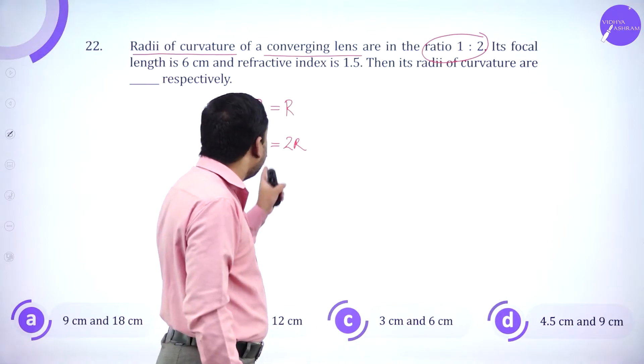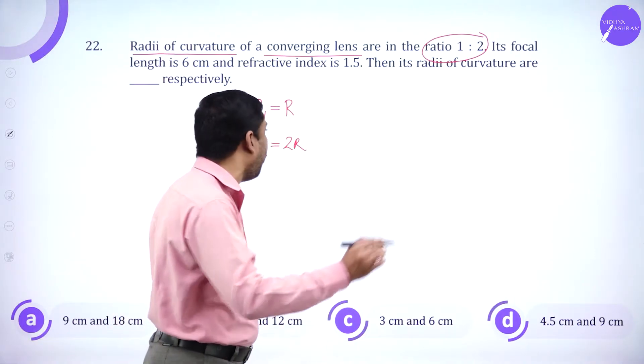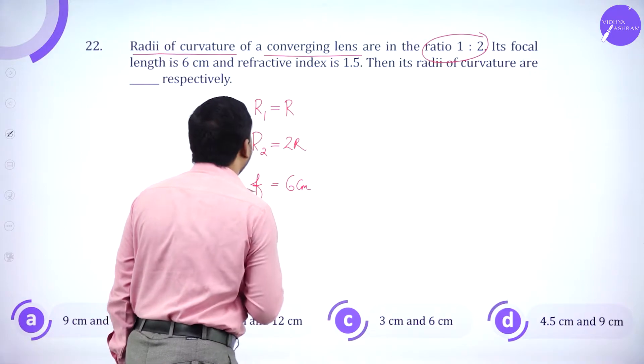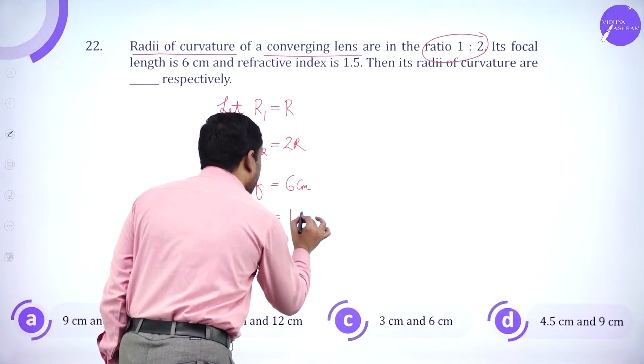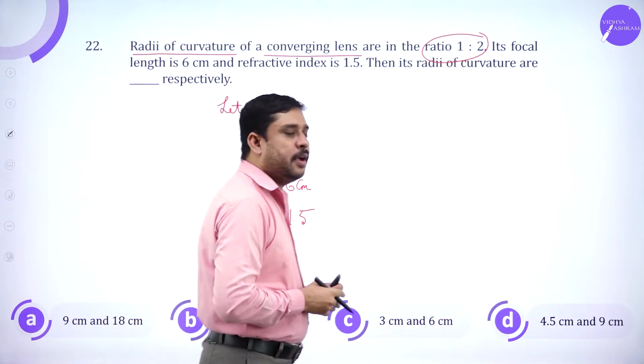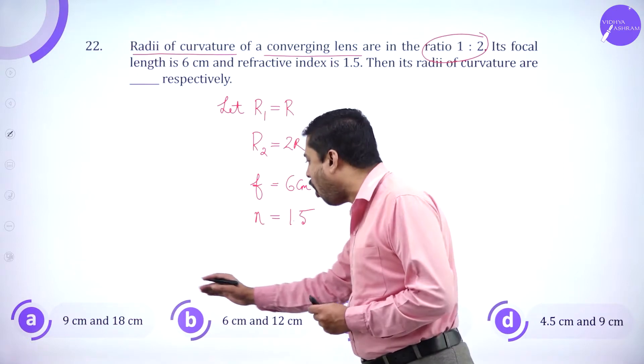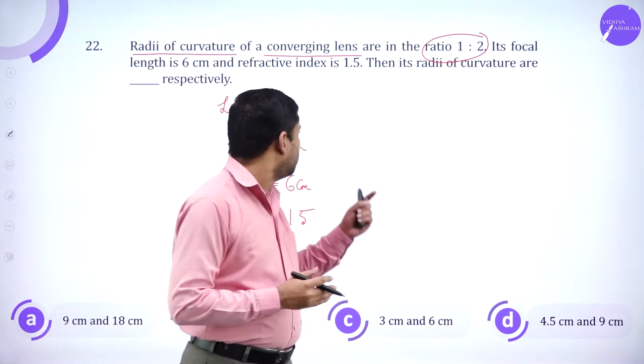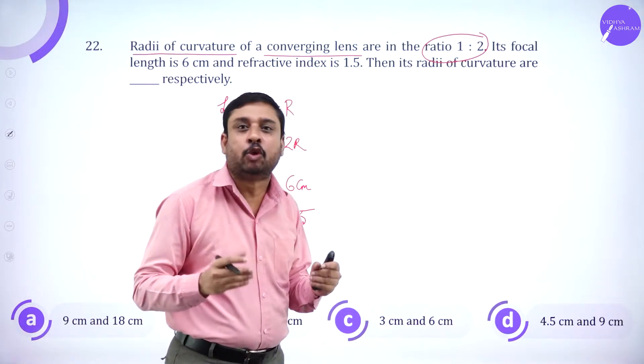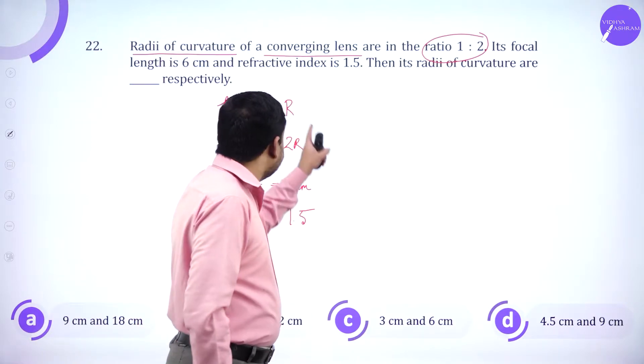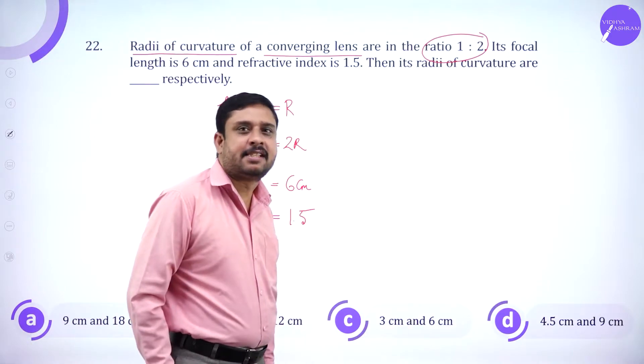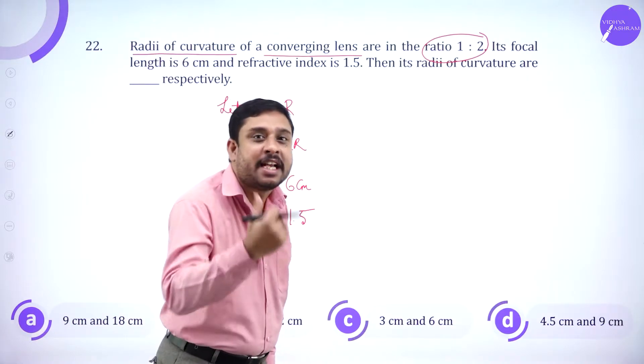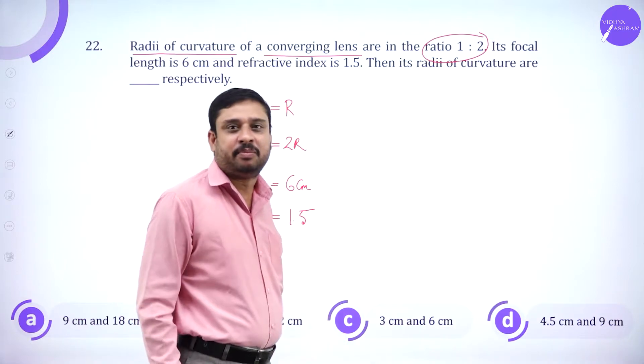Its focal length is 6 centimeters, refractive index is 1.5. Then radii of curvature has to be calculated. Now I say, let R1 be equal to R. Then what is R2 students, 2R, because very clearly they say the radii of curvature is in the ratio 1 is to 2.